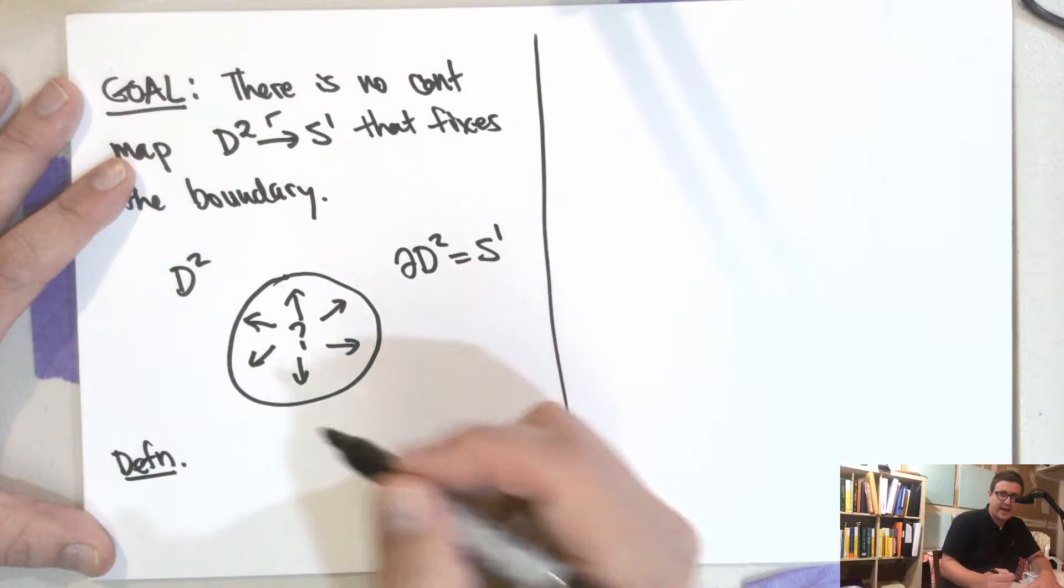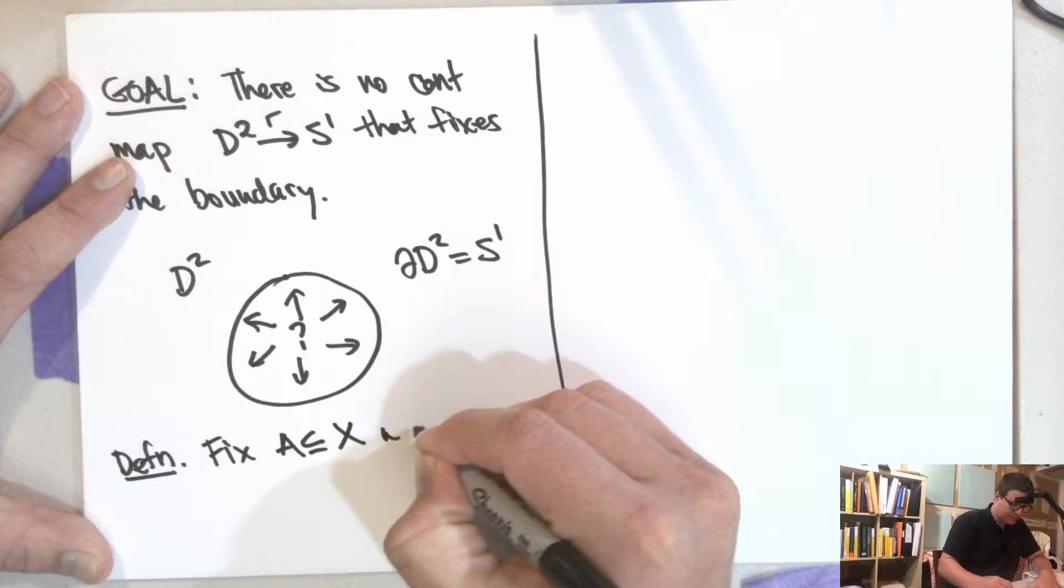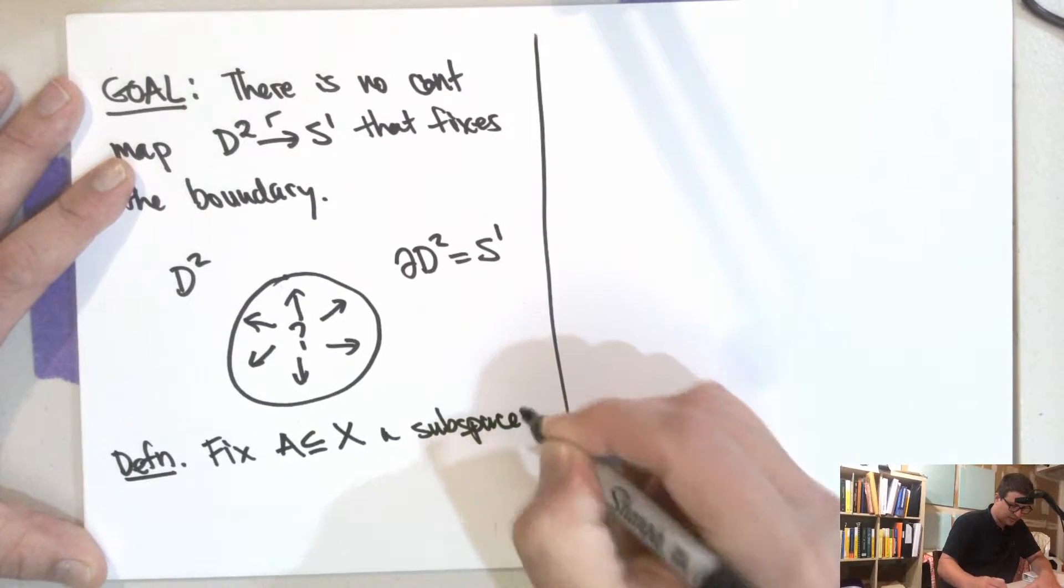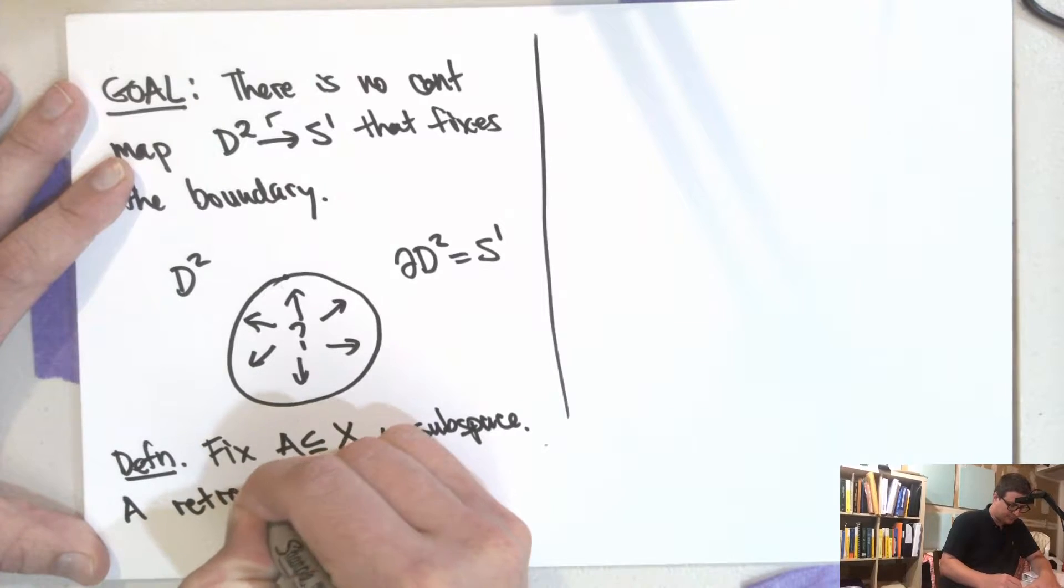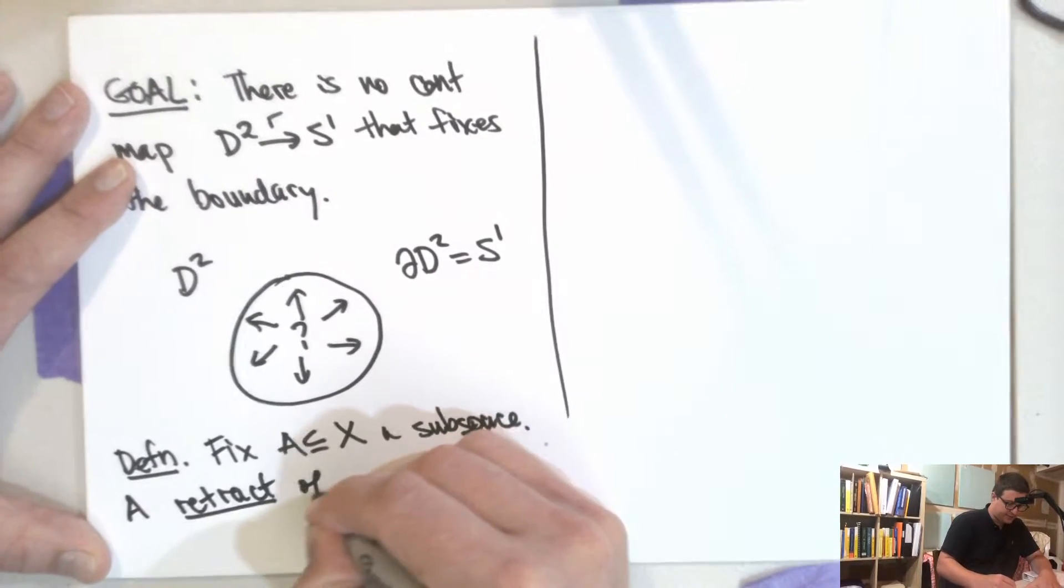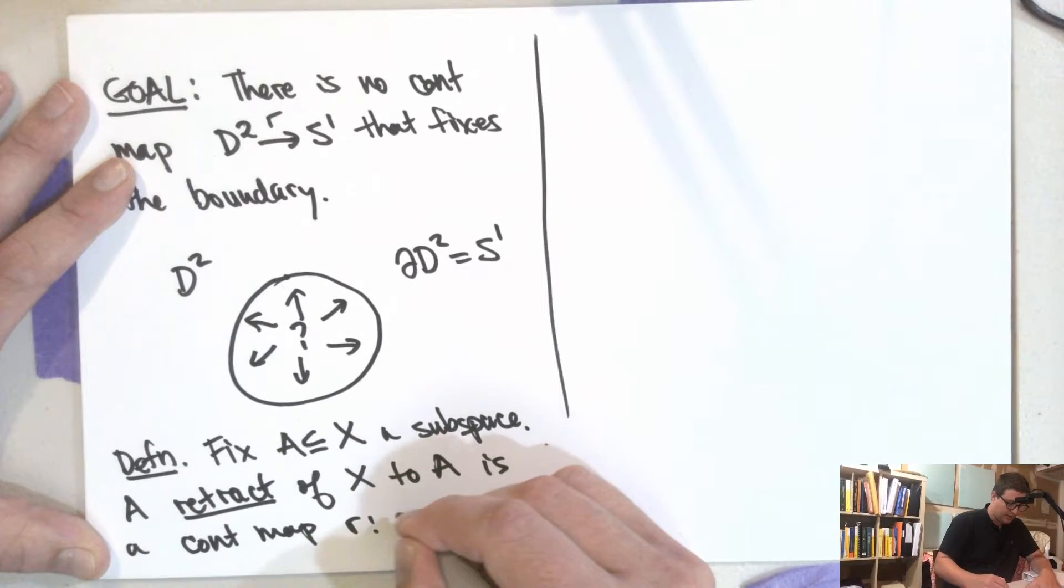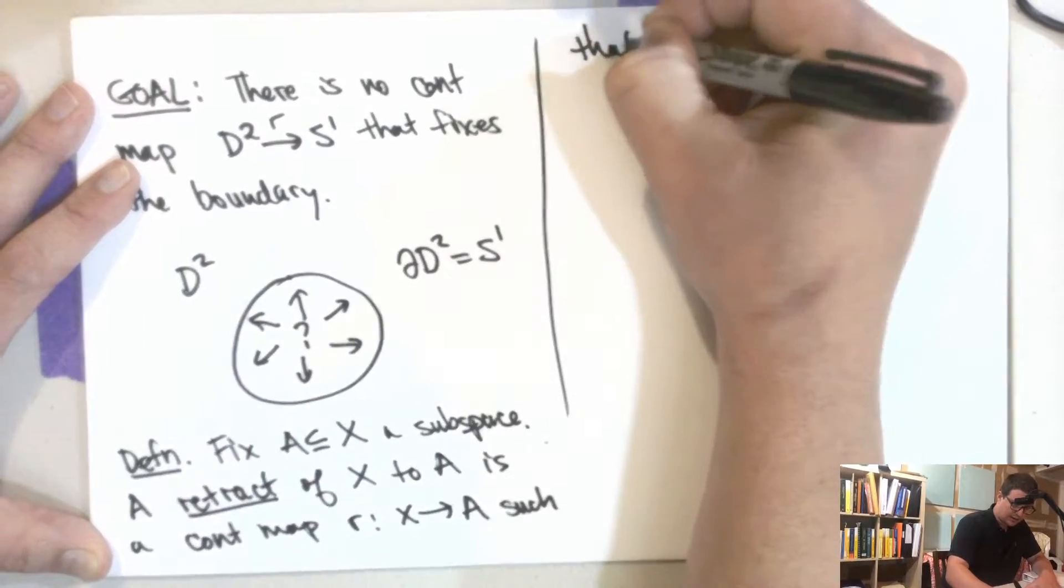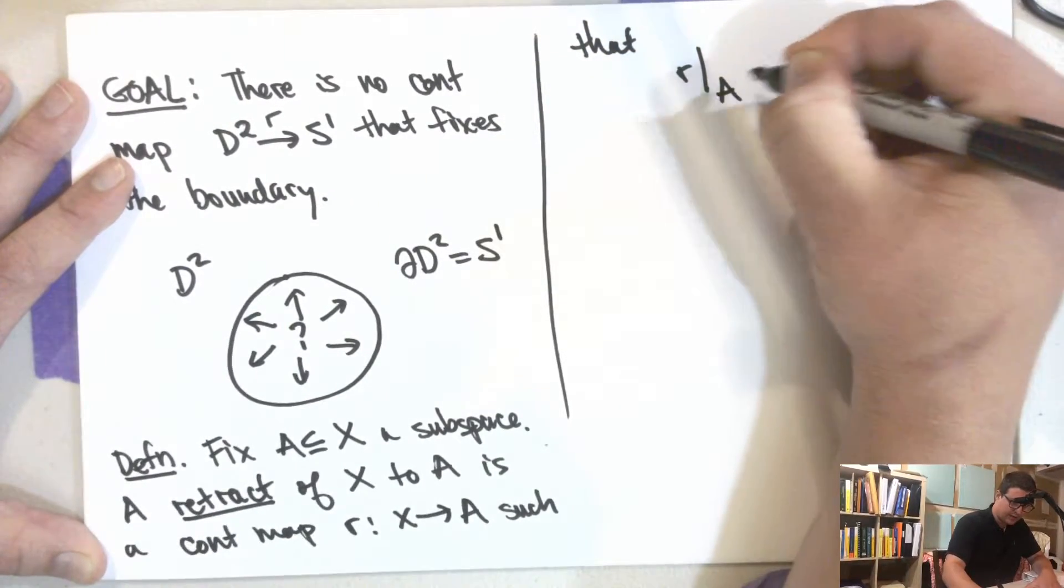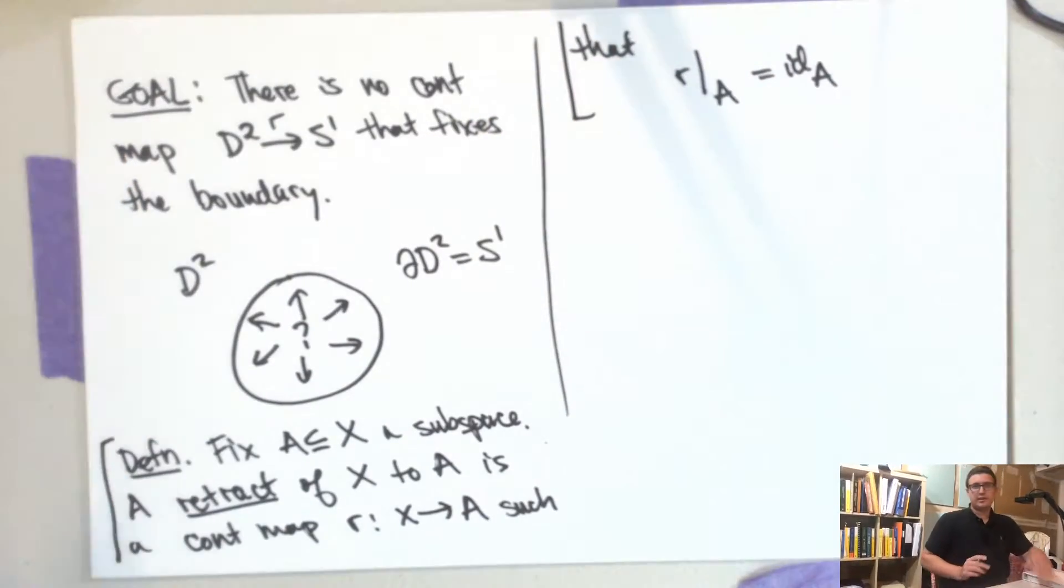So we're going to let A and X be a topological space. So fix A, a subset of X, a subspace of a topological space. So a retract of X to A is a continuous map R from X to A such that R restricted to A is the identity on A. So this is what a retract is.